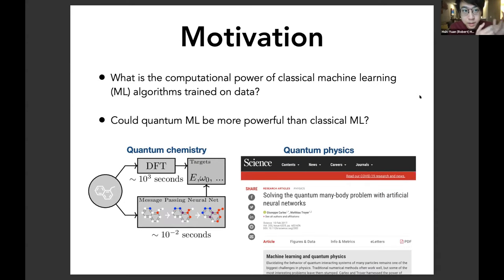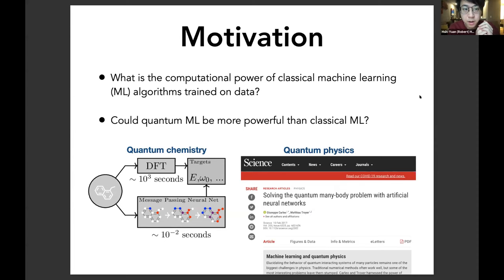Recently, people have had a lot of interest in applying machine learning to solve challenging problems in quantum chemistry and quantum physics, hoping to utilize machine learning to provide solutions better than non-machine-learning algorithms. Furthermore, people also wanted to utilize quantum machine learning that could yield even better solutions. Despite a lot of interest, many fundamental questions remain. First: what is the computational power of classical machine learning algorithms trained on data? Second: could quantum machine learning be more powerful than classical machine learning?